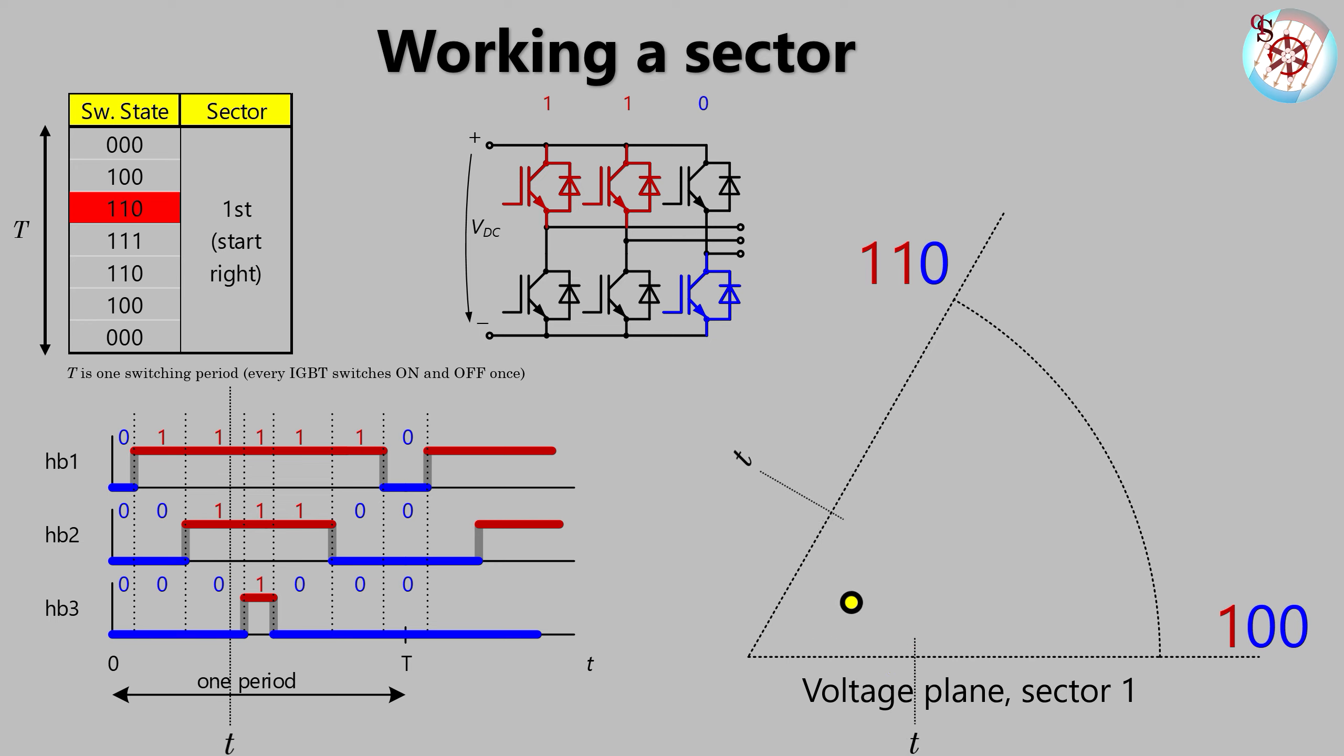State triple one stalls the further voltage vector integration because zero voltage does not accumulate over time. Going back to state one one zero lets the voltage vector further grow in the direction of one one zero. A return to state one double zero changes the integration course again. Now we are going in the direction of one hundred. The state triple zero finalizes the first sector switching sequence. Triple zero stalls the voltage integration again until the transistor switching period is over.